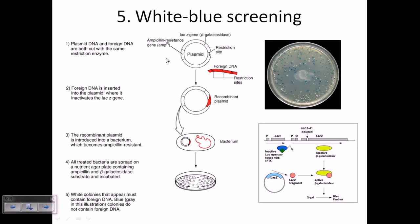Now let's talk about another type of screening called white-blue screening. It is actually a type of biochemical approach for the screening of a particular gene of interest. For example, say this is our plasmid and somewhere...